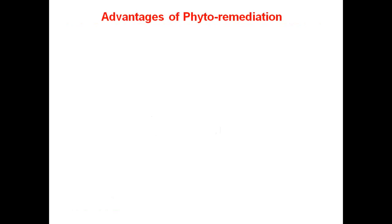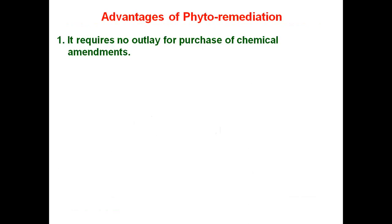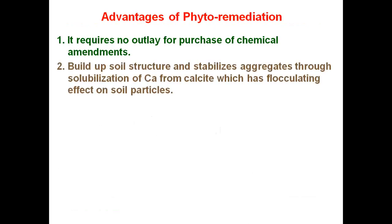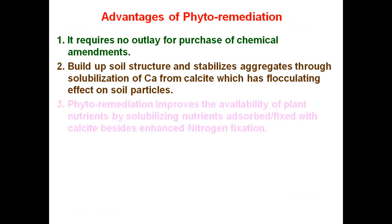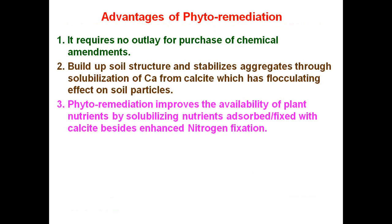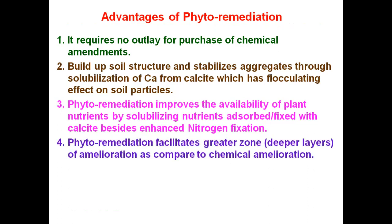The advantages of phytoremediation include: it requires no outlay for purchase of chemical amendments. It builds up soil structure and stabilizes soil aggregates through the solubilization of calcium from calcite, which has a flocculating effect on soil particles. Phytoremediation also improves the availability of plant nutrients by solubilizing nutrients adsorbed or fixed with calcite, besides enhancing nitrogen fixation. It facilitates a greater zone of amelioration as compared to chemical amendments, reaching deeper soil layers as far as the plant roots extend.